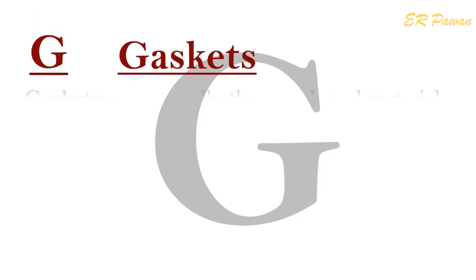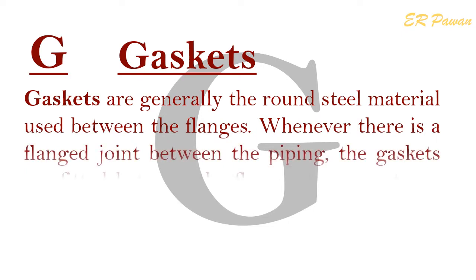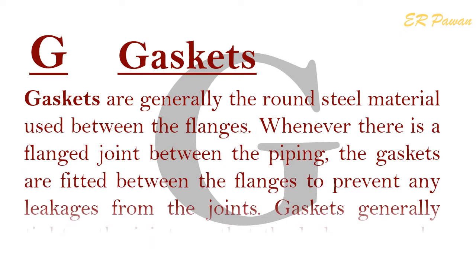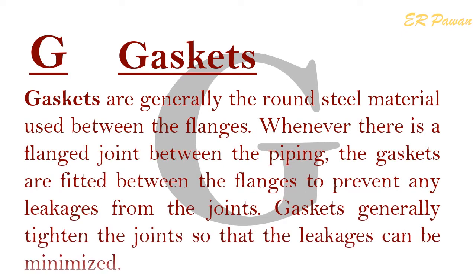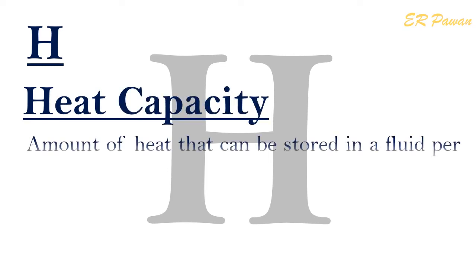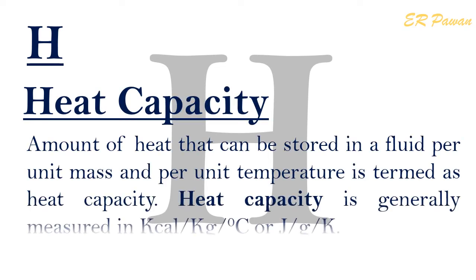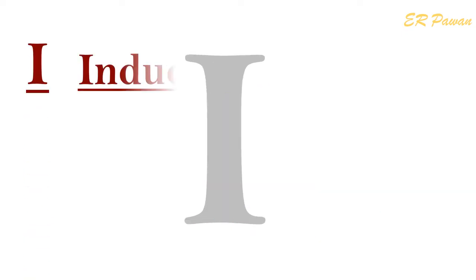Feed Water Line: This is the pipeline through which water is fed to the boiler from the feed water tank with the help of a pump. G — Gaskets: Gaskets are generally round steel material used between flanges. Whenever there is a flange joint in piping, gaskets are fitted between the flanges to prevent leakages from the joints. H — Heat Capacity: The amount of heat that can be stored in a fluid per unit mass and per unit temperature is termed heat capacity. It is generally measured in kilocalorie per kilogram per degree centigrade, or joule per kilogram per kelvin.